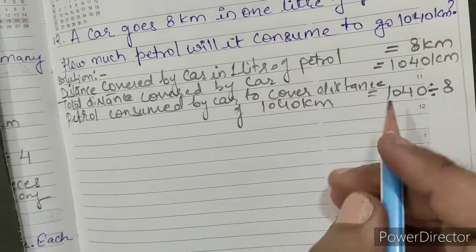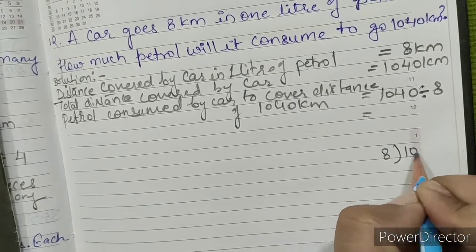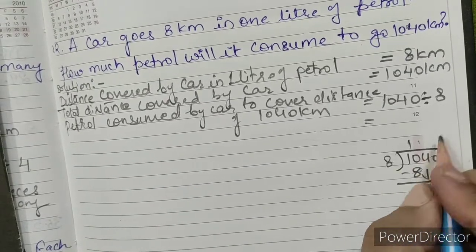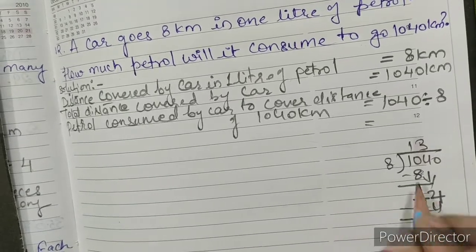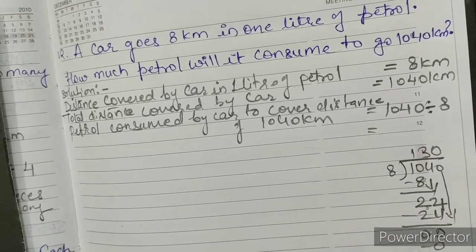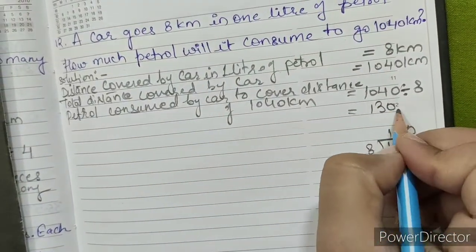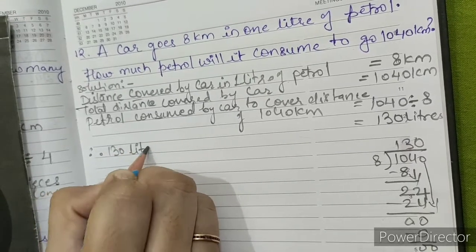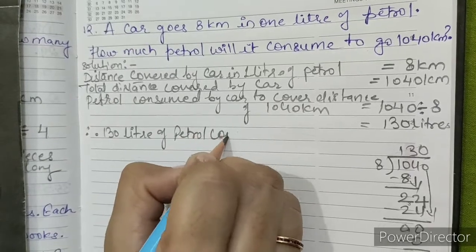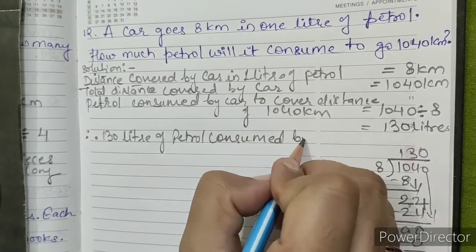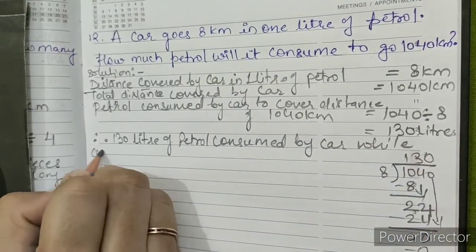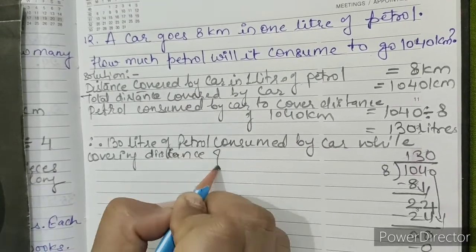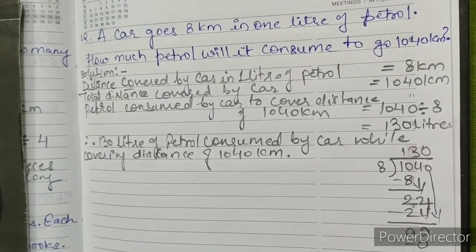8 ones are 8. 10 minus 8 is 2. Bring down 4: 8 threes are 24. 24 minus 24 is 0. Bring down 0: 8 zeros are 0. So, 130 litres. Therefore, 130 litres of petrol is consumed by the car while covering a distance of 1040 km. 130 litres is our answer.